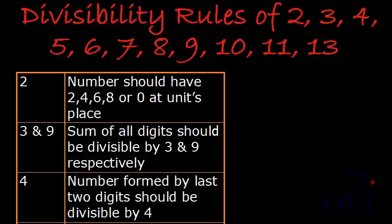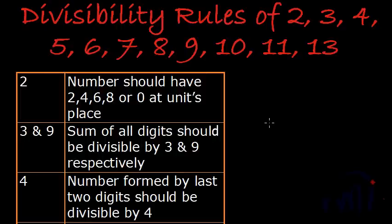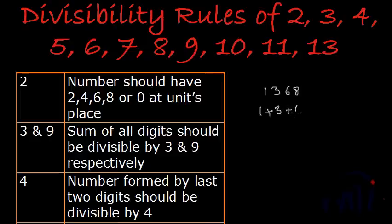Now we have divisibility rules for 3 and 9. Divisibility rule of 3 and 9 is very similar. It says the sum of all the digits should be divisible by 3 and 9. If you are checking divisibility for 3, the sum of the digits of the number should be divisible by 3. If you are checking for 9, the sum of the digits should be divisible by 9. So if I take a number like 1368 and want to check its divisibility by 3, I add all the digits: 1 plus 3 plus 6 plus 8. 1 plus 3 is 4, plus 6 is 10, plus 8 is 18.